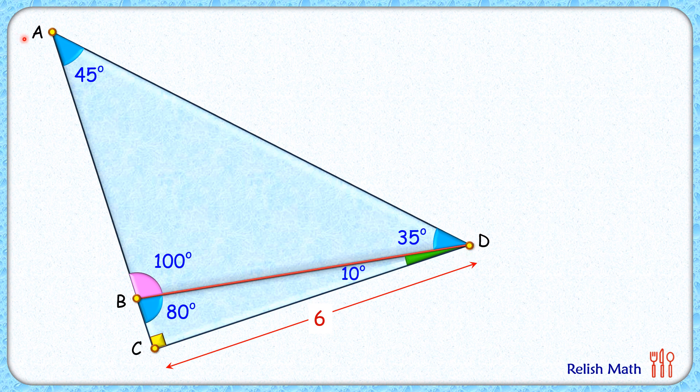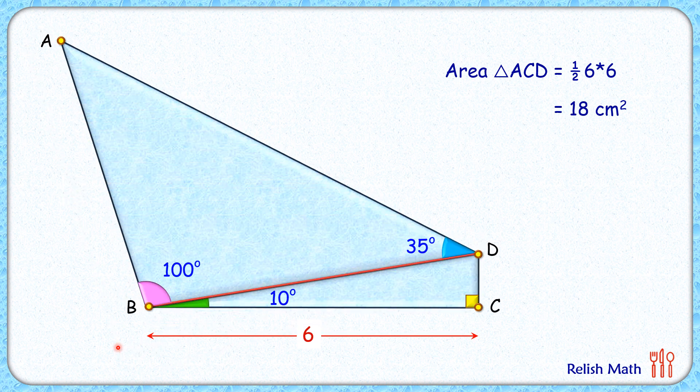So the length AC will be the same as 6 centimeters, or the area of the triangle will be half of base into height, or 18 centimeter square. And thus we can say that the area of the original quadrilateral is 18 centimeter square, and that's our answer.